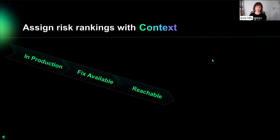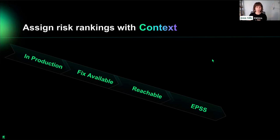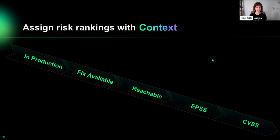The next thing we look at is reachability — is the vulnerability at a function-reachable level? It's in production, and can someone actually get from the code your developers wrote all the way down to the vulnerable function? After that, we look at EPSS, the Exploit Prediction Scoring System, which models the probability of exploit. We usually recommend customers set their EPSS score somewhere between 3% and 5%, though that depends on your own risk tolerance. And the thing that might be most surprising is that the very last thing we look at is CVSS.